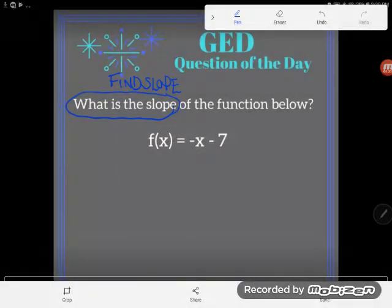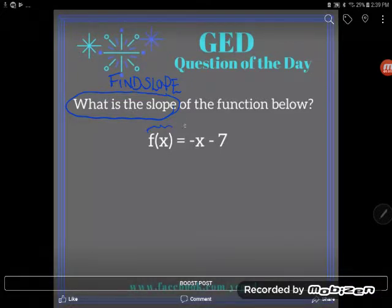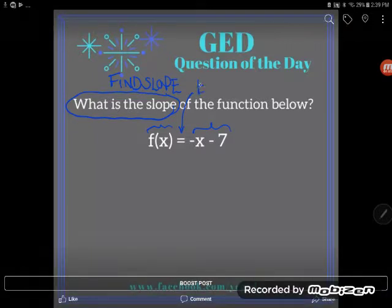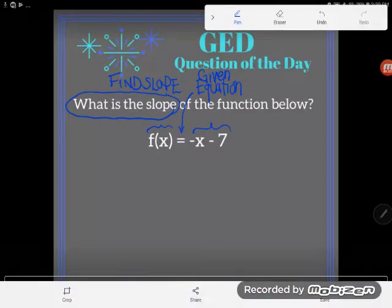This thing is one of those four even though it looks a little different. Notice that I do have a mathematical expression with an equal sign and another mathematical expression. This thing is what we call an equation. So the easiest way to find slope when given an equation is to look at the slope intercept form of the line.